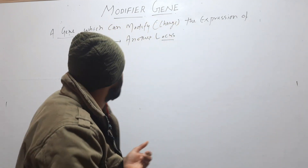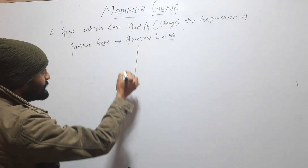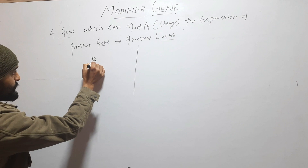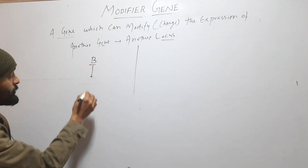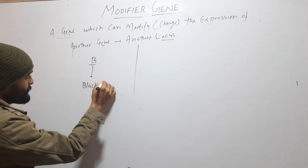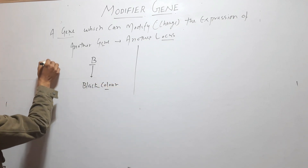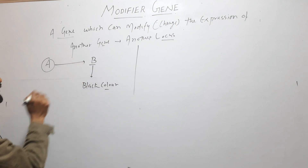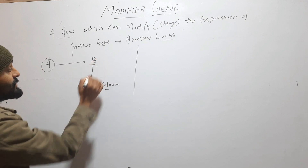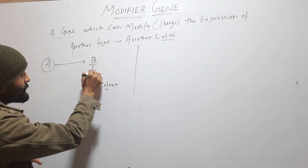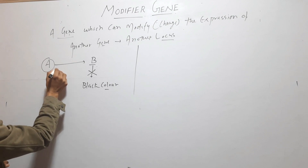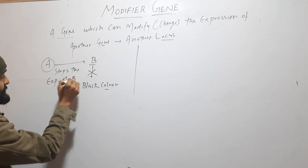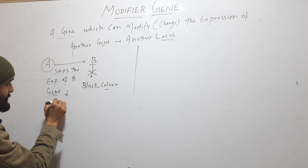Let's understand this by comparing it with epistasis. In case of epistasis, suppose we have a B gene and this gene produces black color, and another A gene is there — this A gene stops the B gene. So this A gene stops the expression of the B gene. This is epistasis.